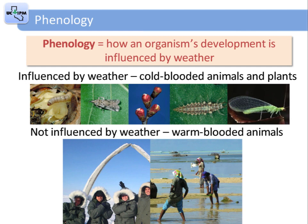In other words, temperature determines when an insect becomes an egg, caterpillar, or adult moth. Humans are warm-blooded and regulate their internal temperature, so human development doesn't change based on ambient temperature. For example, a human pregnancy is 9 months whether a woman is living in the Arctic Circle or at the equator.